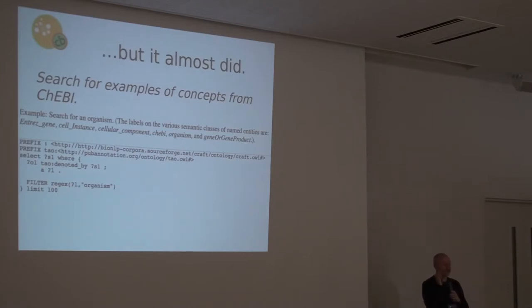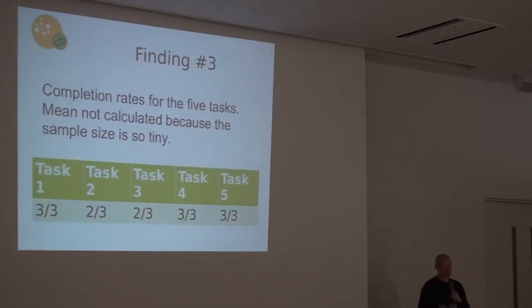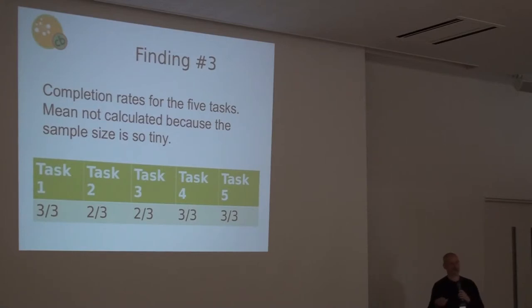When we looked at the completion rates for the five tasks, this is what we found. I'm not calculating the mean because I don't even want to pretend that we have a large enough sample size here to give you statistics, but three out of three people could complete three of the five tasks, and the other two, two out of three were able to complete.